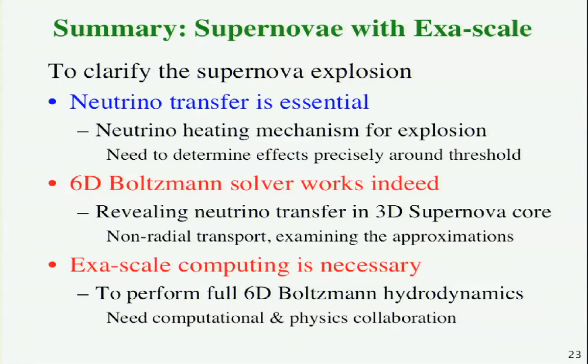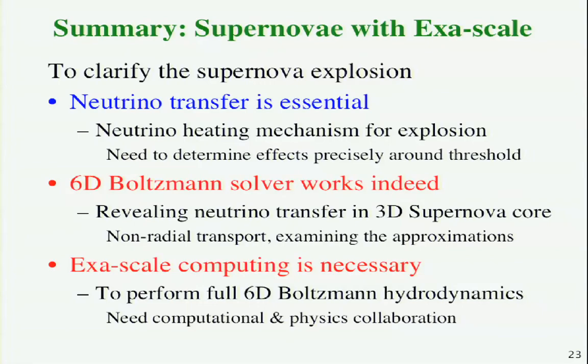To summarize. To clarify the explosion mechanism, neutrino transfer is essential. We need to calculate the heating mechanism for explosion. We need to determine the effects precisely around the threshold. 6D Boltzmann solver works indeed. We built neutrino transfer in 3D. Similarly, we can describe the non-radial transport, and we are examining the approximation in the current simulations. Exascale computing is necessary to perform the full simulation. For that, we need computational physics collaboration. Thank you very much.